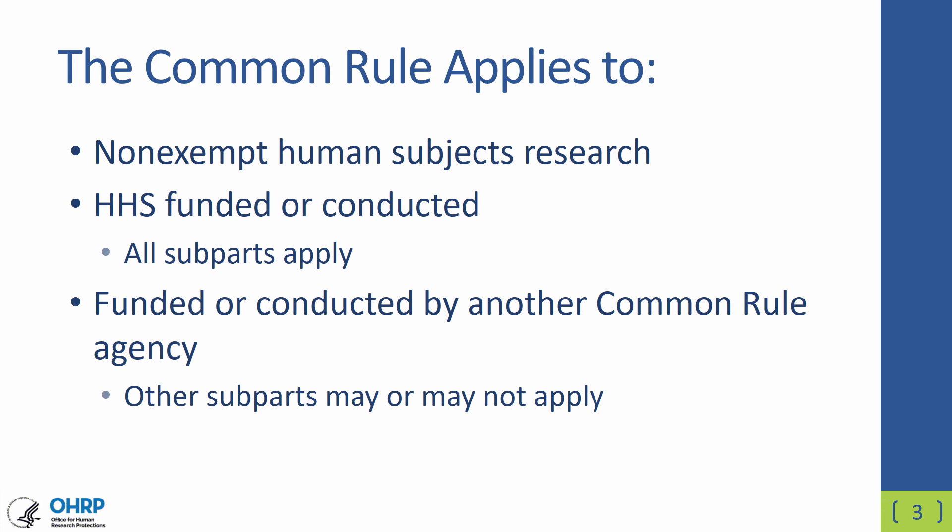The Common Rule applies only to non-exempt human subject research that is funded or conducted by one of the Common Rule agencies. For research that is funded or conducted by the Department of Health and Human Services, all five subparts apply. For research funded or conducted by another Common Rule agency, the other subparts may or may not apply. If you have questions about this, please contact your agency.